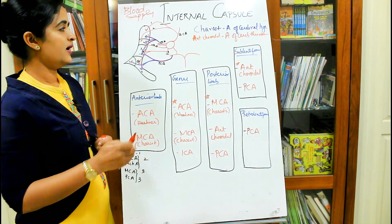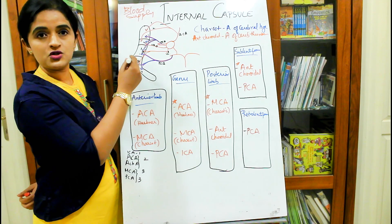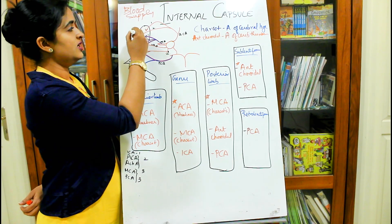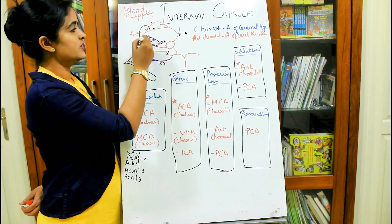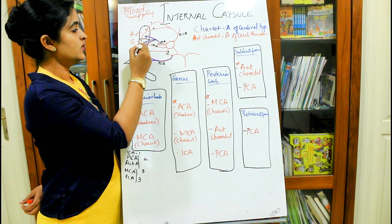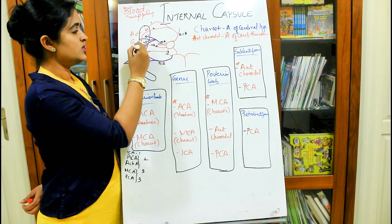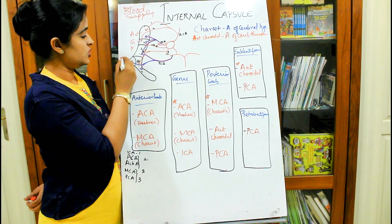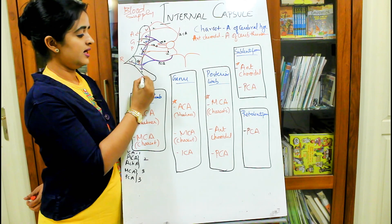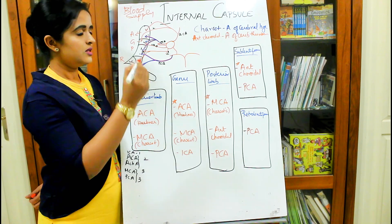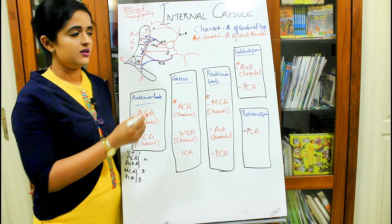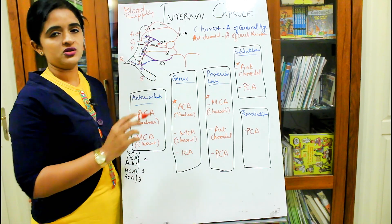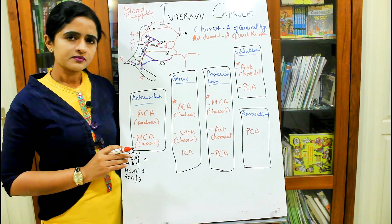I will show the parts of the internal capsule here. This is the anterior limb, this is the genu, this is the posterior limb going back. This is the retrolentiform part and this is the sublentiform part. This is a schematic representation of the internal capsule.